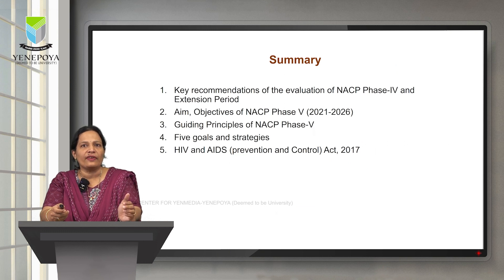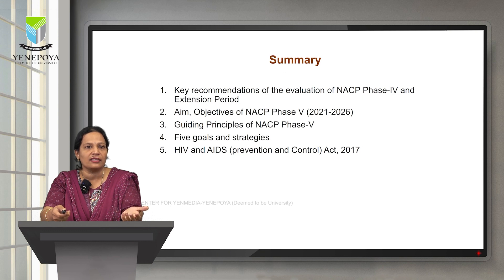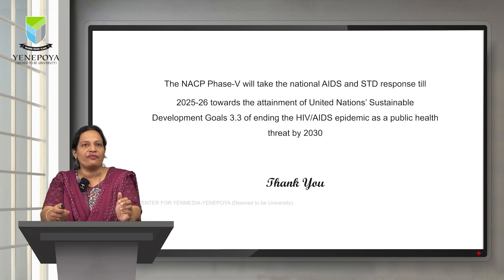To summarize: there were key recommendations from the evaluation of NACP Phase 4 and its extension period in three major areas — program management, service delivery, and strategic information — that led to the formulation of NACP Phase 5. We looked at the aims, objectives of NACP Phase 5, eight guiding principles, five goals and strategies including reduction of new cases, reduction of mortality, elimination of vertical transmission, and reduction of stigma and discrimination. We also covered the HIV and AIDS Prevention and Control Act 2017. NACP Phase 5 will take the National AIDS and STD response till 2025-26 towards attainment of United Nations Sustainable Development Goal 3.3 of ending the HIV-AIDS epidemic as a public health threat by 2030.